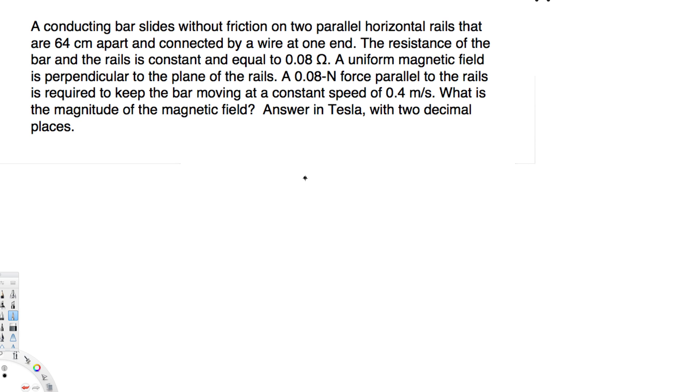A 0.08 newton force parallel to the rails is required to keep the bar moving at a constant speed of 0.4 meters per second. What is the magnitude of the magnetic field? So here they are asking for the magnetic field B.